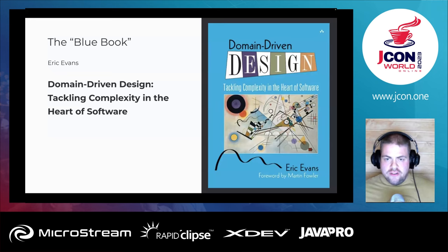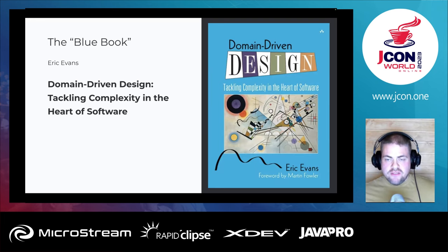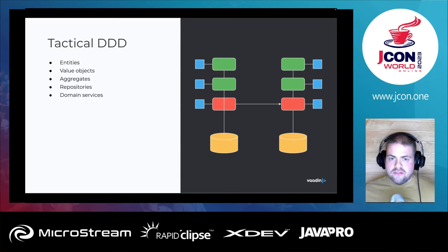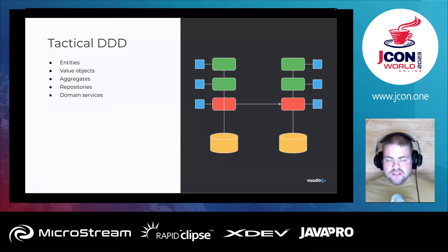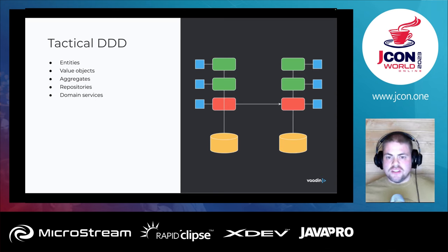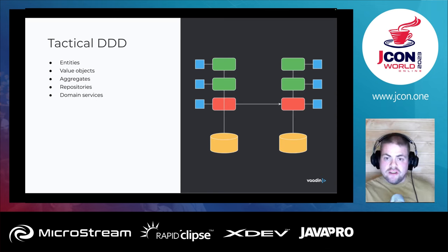I learned tactical design first because strategic design is covered in the second half of the book — and of course I stopped reading as soon as I thought I had found what I needed. Tactical DDD building blocks, as a recap, include entities, value objects, aggregates, repositories, and domain services. Armed with this new knowledge, we started refactoring the data model into something that looked more like a domain model: we introduced repositories, entities, aggregates, aggregate roots, and some value objects. The business logic was still mostly left in various service types.